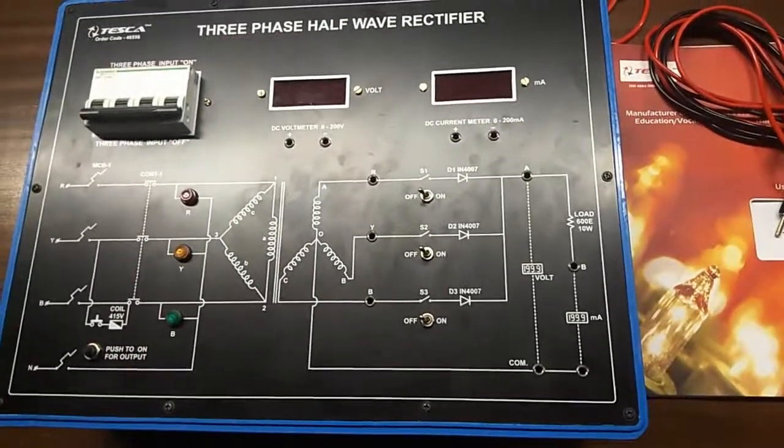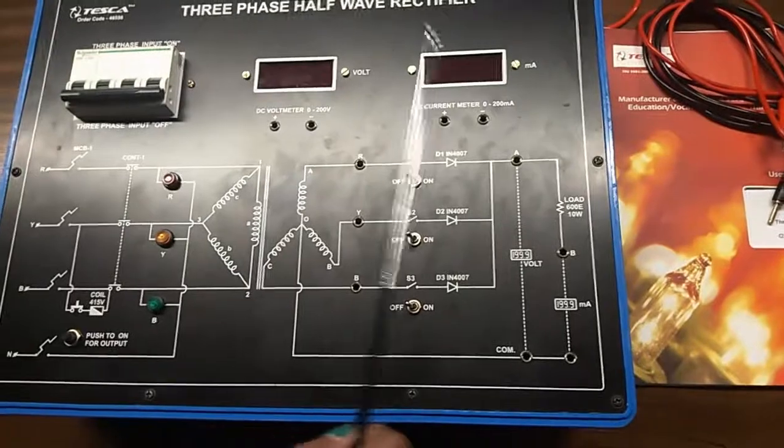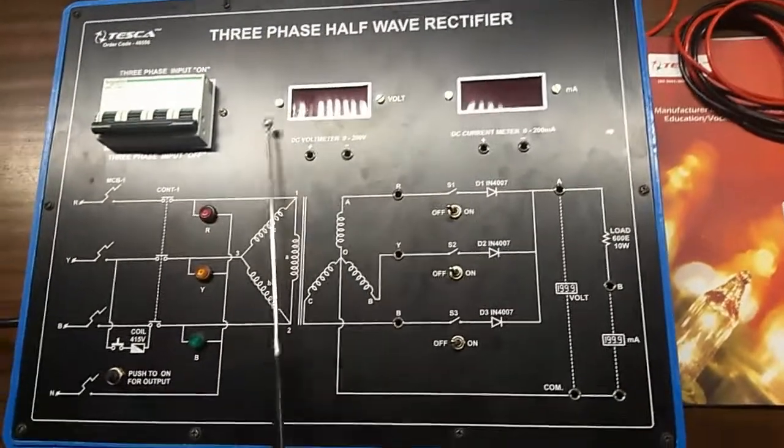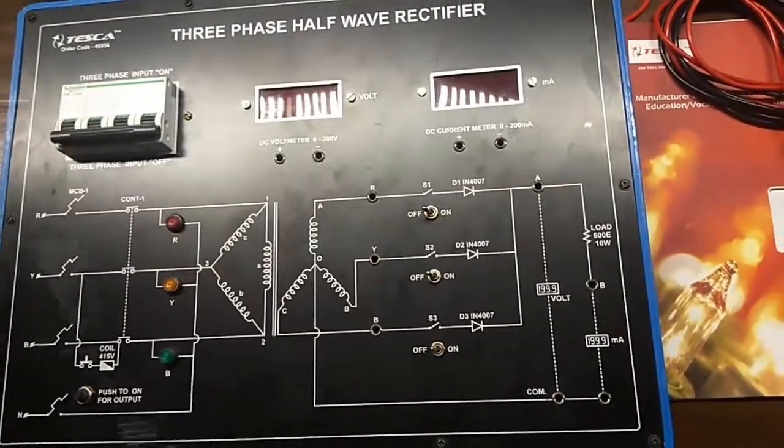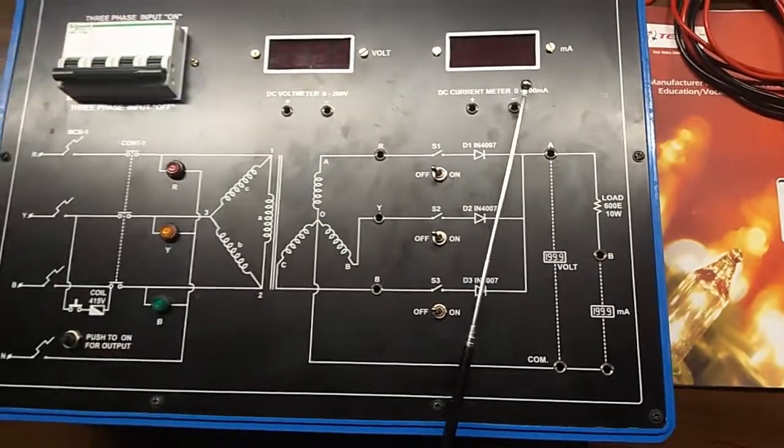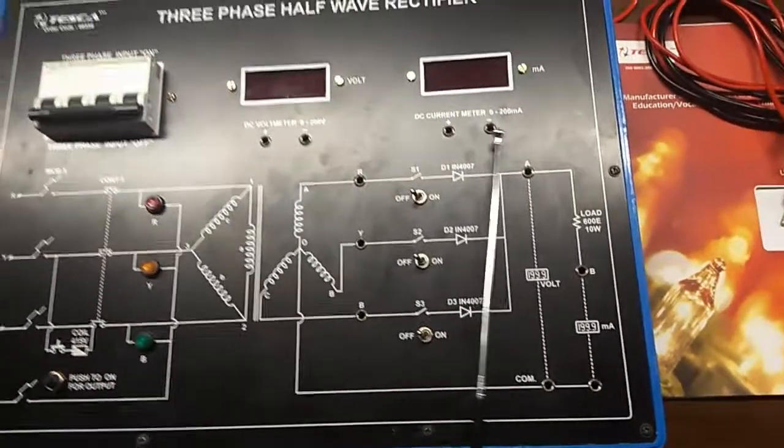These are the mimicking diagrams given on the trainer kit. There are two DPM digital panel meters. This is a DC voltmeter, range 0 to 200 volts, and this is a DC current meter, range 0 to 200 milliamperes.